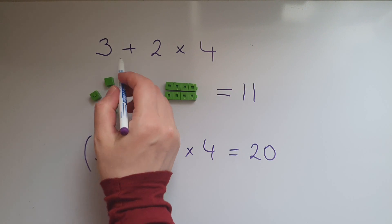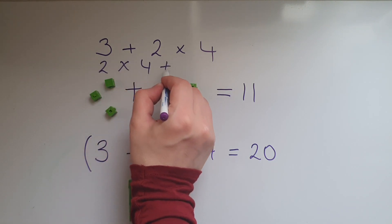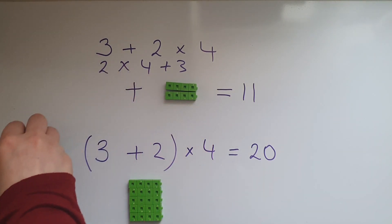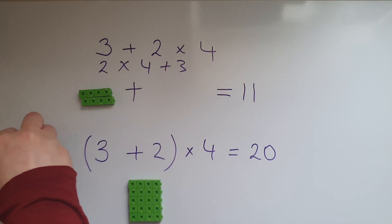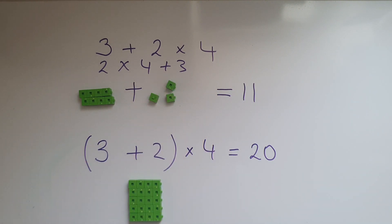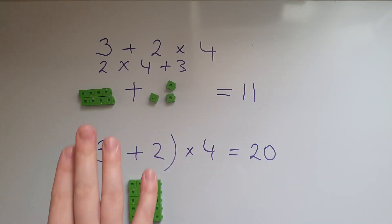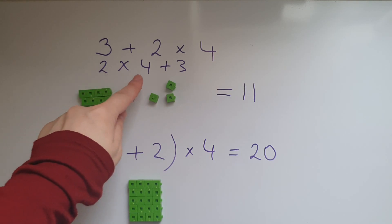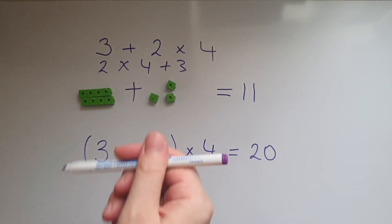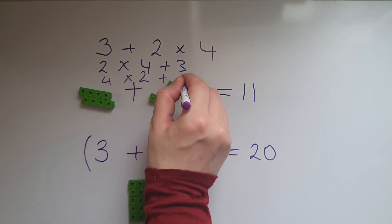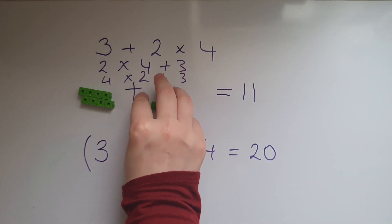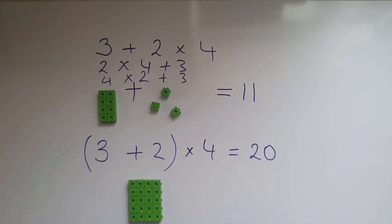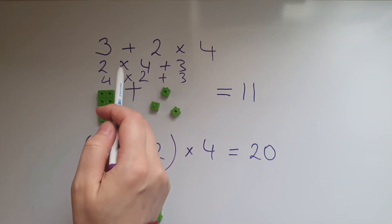What if we had 2 times 4 add 3? That would still be the same — 2 lots of 4 add 3 gives us 11, because it's the operation that matters. We could also have 4 times 2 add 3 and it would give us the same answer, 11. So we've established that multiplication comes before addition.